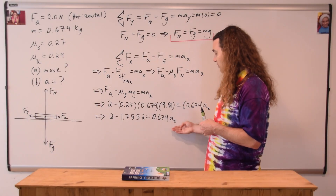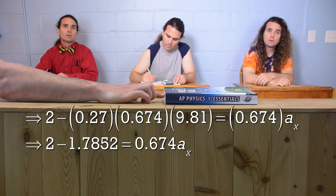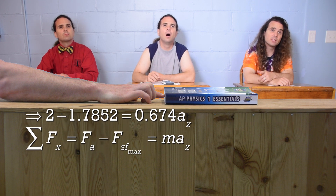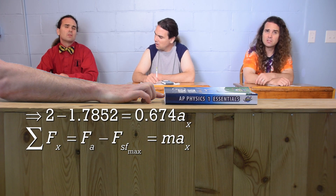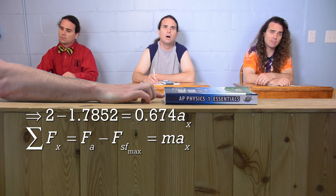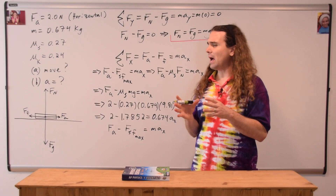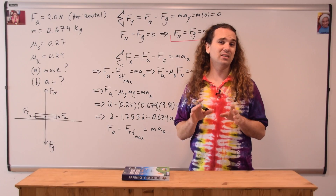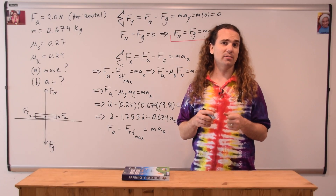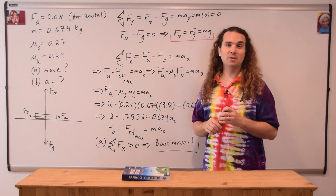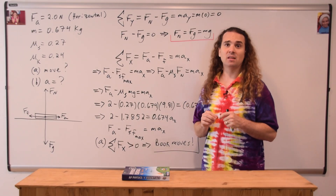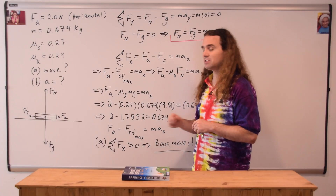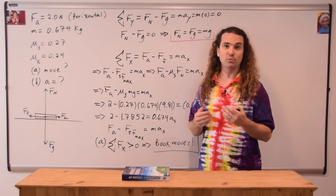Believe it or not, this equation shows us if the book is moving or not. Bo, how? Well, 2 Newtons is the force applied, and 1.7852 Newtons is the maximum force of static friction. Because the force applied is greater than the maximum force of static friction, the book moves. Bo, I agree with that in this particular case; however, I prefer to look at it in a more general sense. Because the net force in the x direction is positive, the book will accelerate to the right.